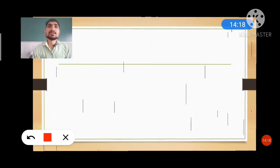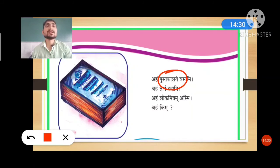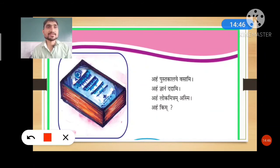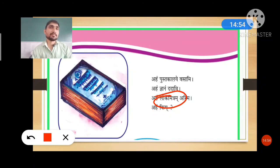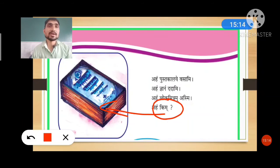Now the last and final verse in your book. Aham pustakalaya vasami — aham means 'I,' pustakalaya means 'library,' vasami means 'live' — I live in the library. Aham jnanam dadami — jnanam means 'knowledge,' dadami means 'give' — I give knowledge. Aham lokmitram asmi — lok means 'public,' mitra means 'friend,' lokmitram means 'public friend,' asmi means 'I am' — I am a public friend. Aham kim — who am I? Kim is used for a neuter or non-living thing.